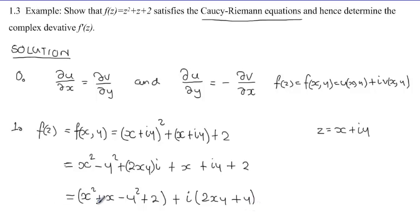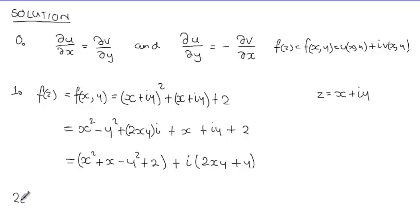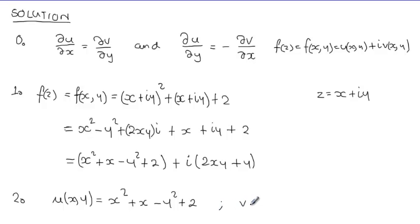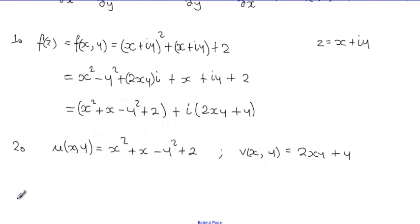We can now clearly identify the real and imaginary parts. The real part is u(x, y) = x² + x − y² + 2, and the imaginary part is v(x, y) = 2xy + y. Having identified u(x, y) and v(x, y), we proceed to step 3: testing whether the function satisfies the Cauchy-Riemann equations.